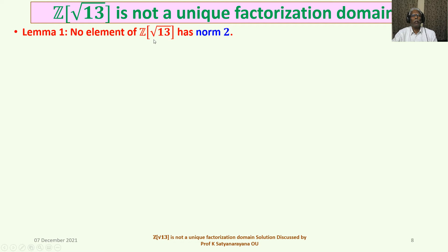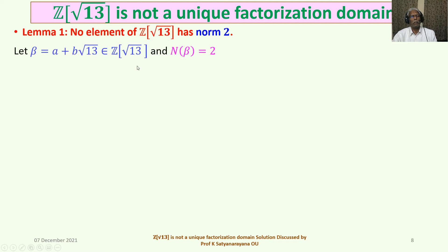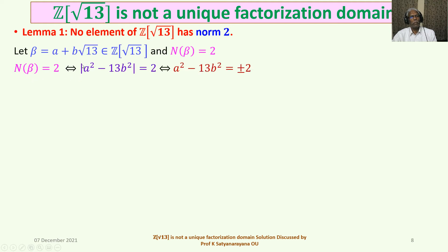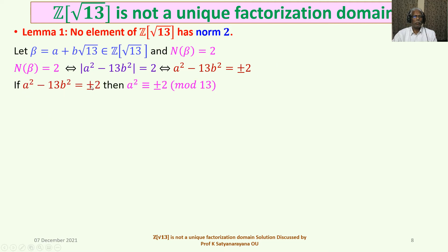Lemma 1: No element of Z√13 has norm 2. Let β = A + B√13 belong to Z√13 and suppose N(β) = 2. By definition, |A² − 13B²| = 2, which means A² − 13B² = ±2. If B = 0, then A² = ±2, and taking things modulo 13, we get A² ≡ ±2 (mod 13). Any integer is of the form 13K + i where i = 0, 1, 2, ..., 12.